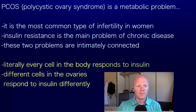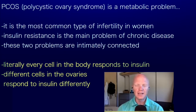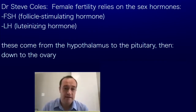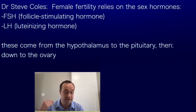To get things going with this metabolic classroom discussion, can you share with us what is the role of the estrogens — that small family of prototypical female sex hormones — in female fertility? Female fertility really relies a lot on the female sex hormones, particularly FSH and LH, which is follicle stimulating hormone and luteinizing hormone. And those come from the hypothalamus to the pituitary, then down to the ovary.